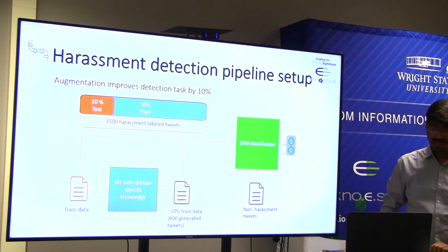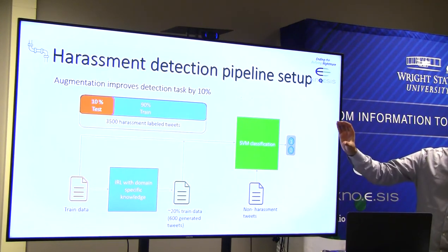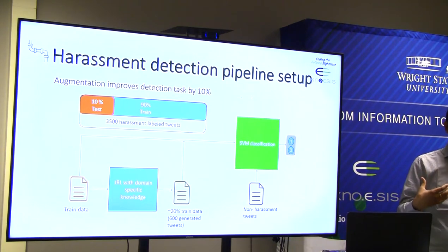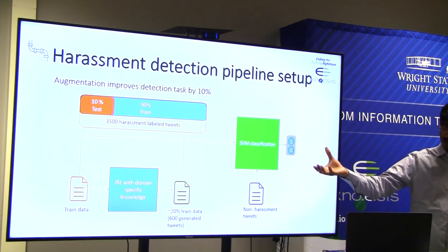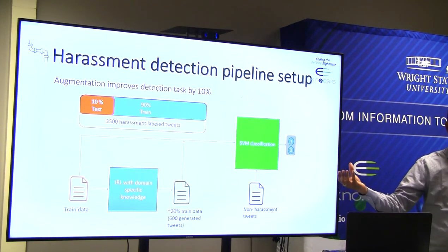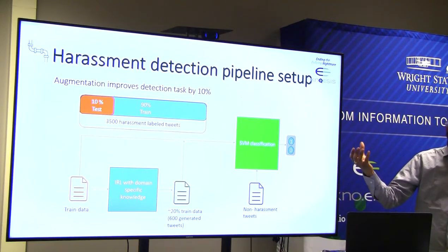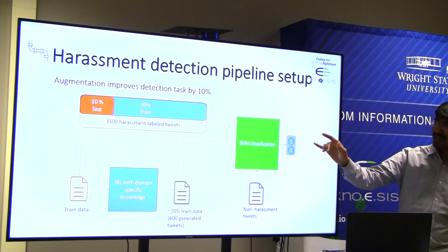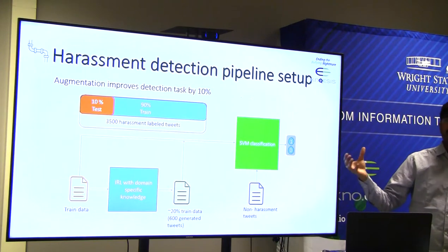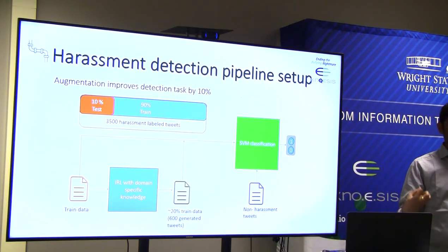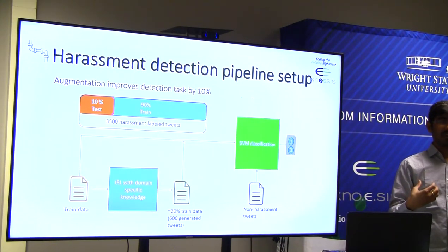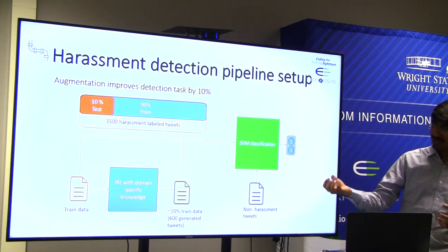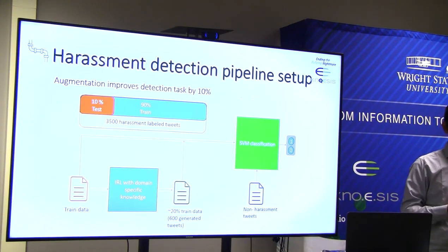For the harassment detection pipeline: we have 3,500 harassment-labeled tweets. We used 90% of those as training data for our text generation model. We generated approximately 600 tweets — around 20% of the training data. We augmented those tweets into the training data and combined it with non-harassment tweets data. The classifier performs better with the added generated sentences — specifically, it achieves 10% better classification performance compared to without generated sentences.